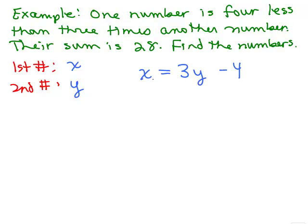So one number is 4 less than 3 times the other number. So x has got to be 3y minus 4. That's equation 1. What's the second sentence? Their sum is 28. Add the two numbers and you get 28.